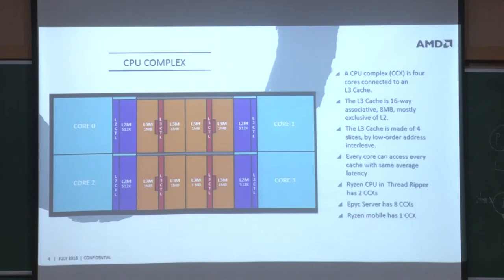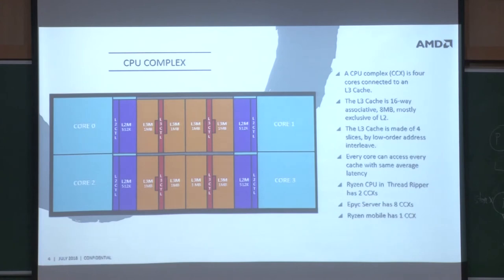In the case of Threadripper, our high-end desktop part, there are two CCXes in one die. The EPYC server has eight CCXes, giving 32 cores total. For laptop parts, there is just one CCX — a four-core part.